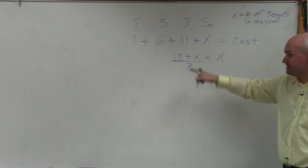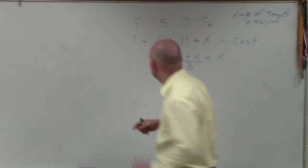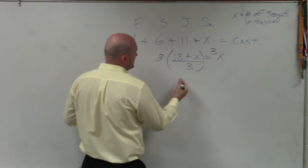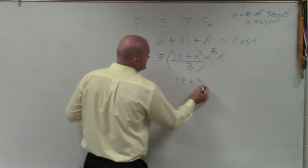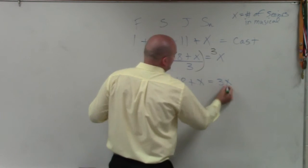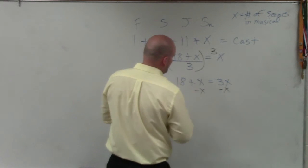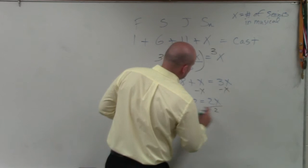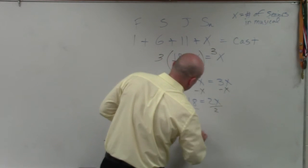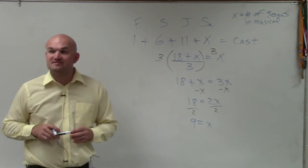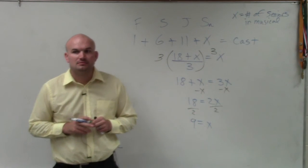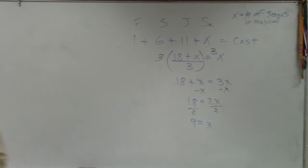So now, to solve this, I get rid of my fraction by multiplying by 3 on both sides. And I get 18 plus x equals 3x. And subtract by x, subtract by x. 18 equals 2x. Divide by 2, divide by 2. 9 equals x. So therefore, the number of seniors are 9. So that's what we're doing. Anybody have any questions so far on that?